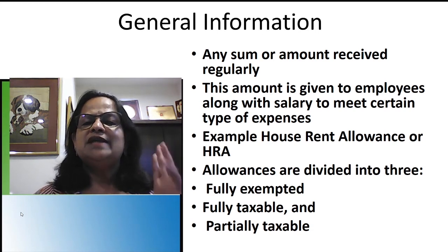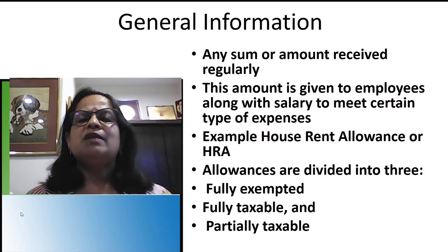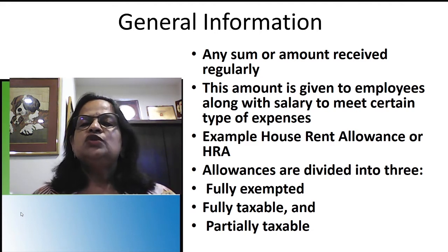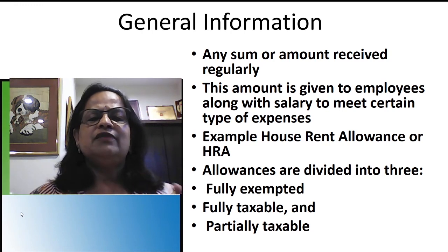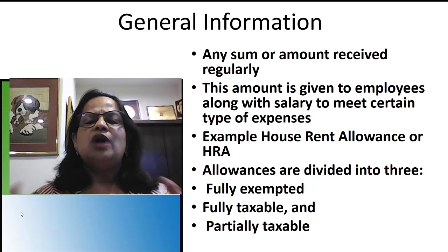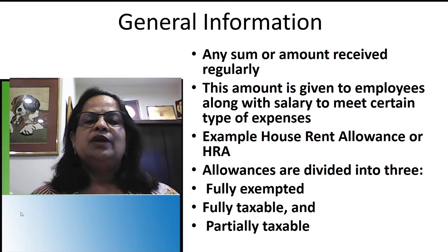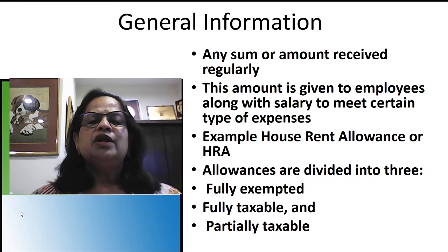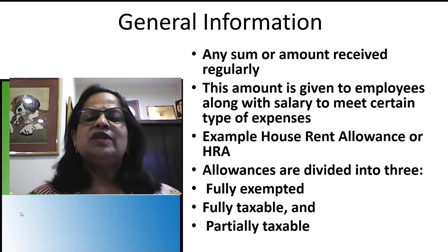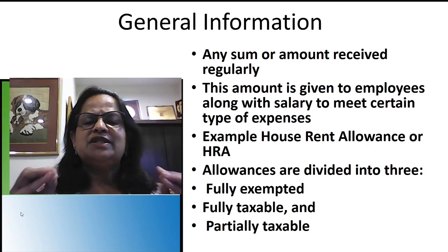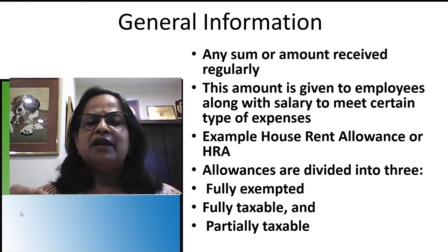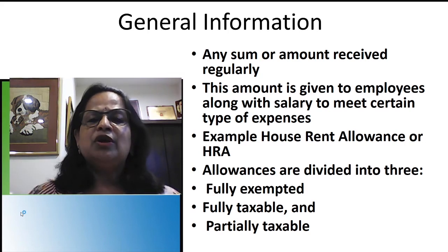The total gross salary is a component of different items — basic salary, dearness allowance, city compensatory allowance, uniform allowance, house rent allowance, and so on. Allowances are amounts given to employees along with salary to meet certain expenses. House rent allowance helps meet rental expenses when you move to a city for work. Uniform allowance is given, for example, to police department employees who are required to be in uniform.